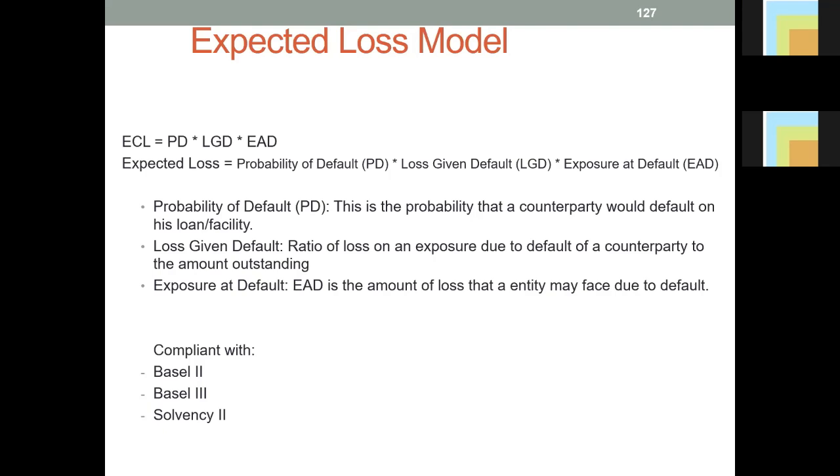Loss given default, however, looks at the ratio of loss as a result of the fact that the obligor will not pay the way he's supposed to pay.